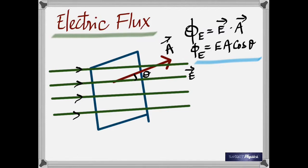Whenever you take the angle between the electric field and the surface, you always take the angle with the perpendicular drawn to the surface — get that into your mind. Normally, when you have a surface and lines like that, you might say the angle is 90 degrees. But from now on it is 0 degrees. Because you always take the angle not with the surface but with the perpendicular drawn to the surface.